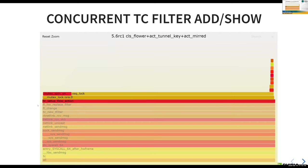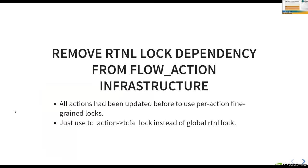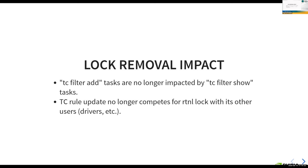This contention occurs because the dump thread monopolizes RTNL lock until the netlink packet is fully filled with filter data. The solution was straightforward: fully remove RTNL lock dependency from this function. Since all actions were already converted to use their own fine-grained per-action locks (TCFA lock), I used those instead of requiring the global RTNL lock. A few minor issues were fixed — some called functions were sleeping, and TCFA lock is a spinlock while RTNL is a mutex, so sleeping while holding TCFA lock isn't allowed. This resulted in significant performance improvement when running filter update and dump concurrently.